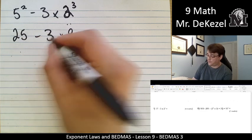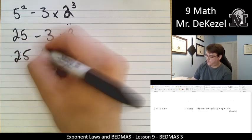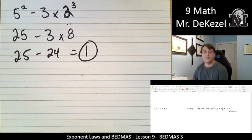3 times 8 is 24, so 25 minus 24. Our answer is 1. I like that answer.